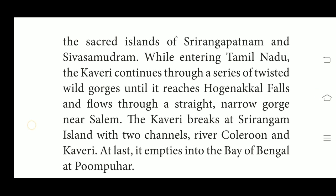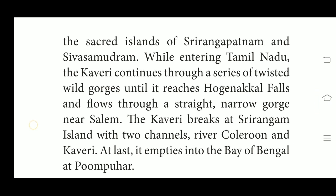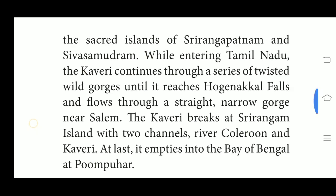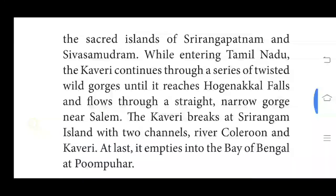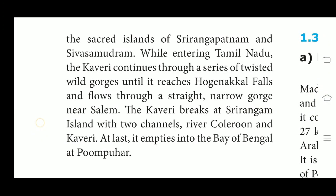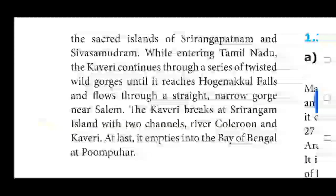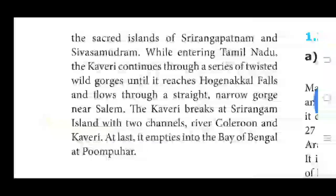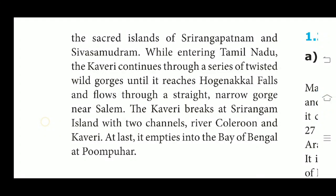The Grand Anicut, also called Kallanai, was built across the river Kaveri. After Kallanai, the river breaks into a large number of distributaries and forms a network all over the delta. The network of distributaries within the delta of Kaveri at its coast is called the Garden of Southern India. At last, it empties into the Bay of Bengal at Poompuhar.